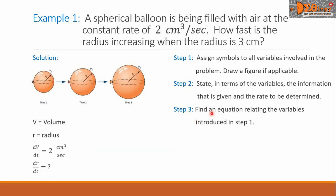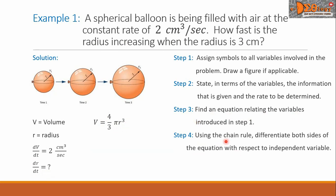Step 3: Find an equation relating the variables introduced in Step 1. We know the formula of the volume is equal to 4/3 times pi R cubed. Step 4: Using the chain rule, differentiate both sides of the equation with respect to the independent variable.